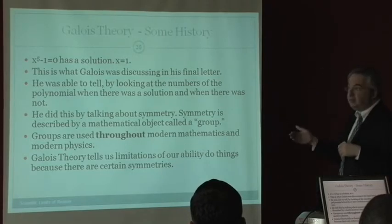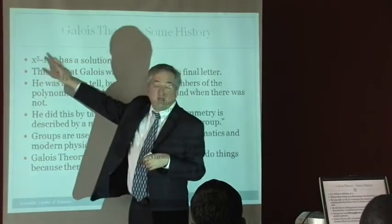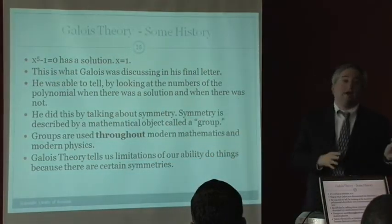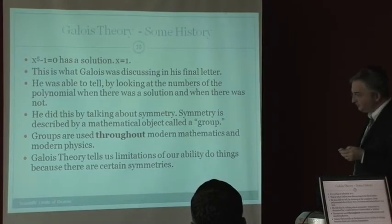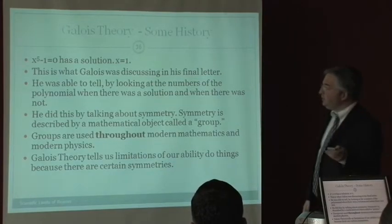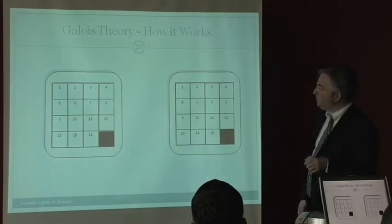Groups are used throughout modern mathematics and modern physics. This is what Herman Weyl meant by it being an important letter. The word groups, you cannot do math and you cannot do physics without knowing what a group is and what symmetries are all about. And this is what he's telling me. So, Galois theory tells us limitations of our ability to do things because there are certain symmetries that the equation sets. And so, these are limitations. Again, for x to the 1, x squared, x to the 3rd, x to the 4th, we have ways to do it. For x to the 5th and higher, we can't do it. We cannot solve these problems.